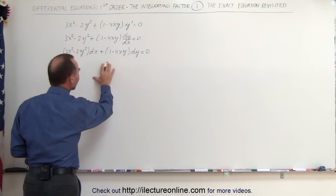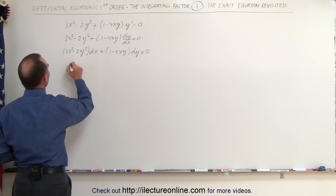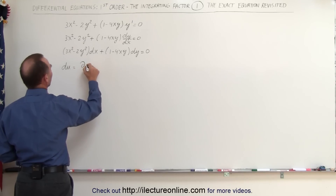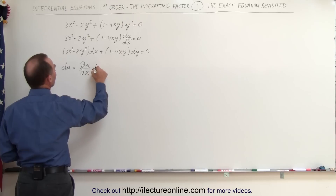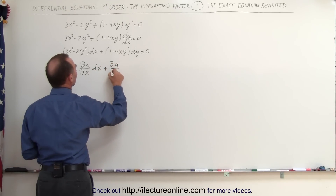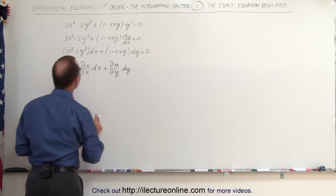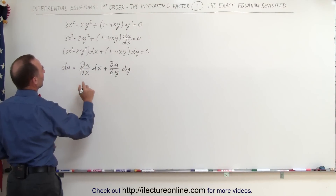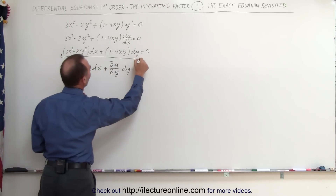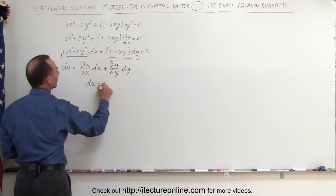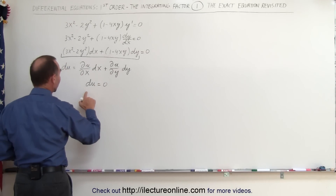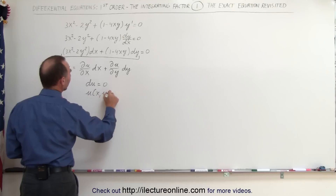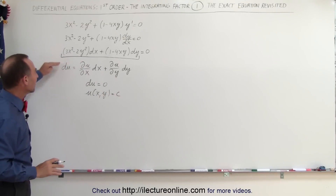If the left side can be written as du, where du equals the partial derivative of u with respect to x times dx plus the partial of u with respect to y times dy, then the left side is simply du = 0. Integrating that gives us u(x, y) = constant.